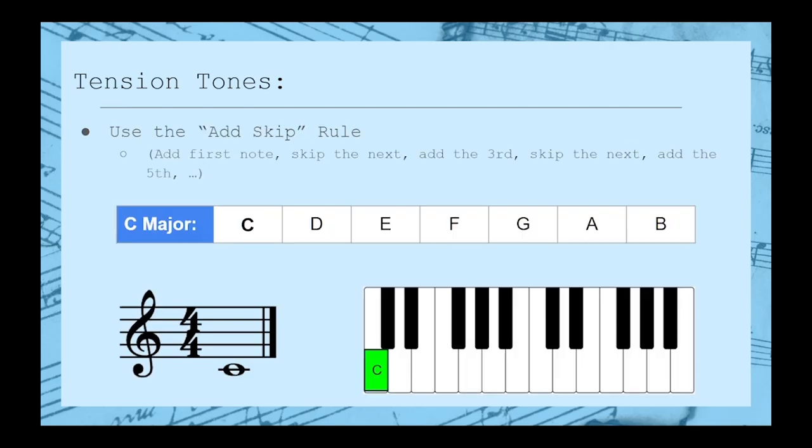Now, finding the extensions to a chord is actually pretty simple. You'll just start with something called the add-skip rule. Working in the key of C major, we'll start with the very first note.